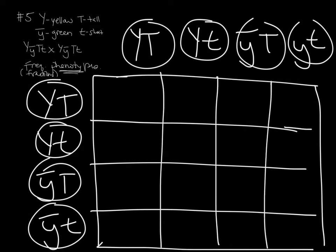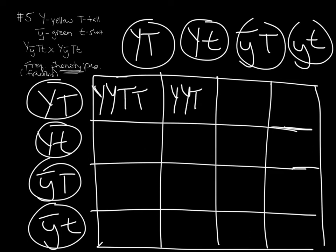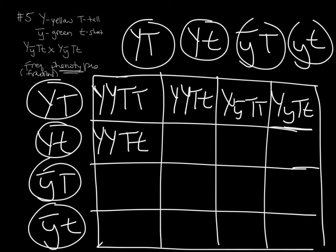Not every cross with two genes has all 16 combinations, but dihybrids do. You say, what if this egg and this sperm were fertilized? Then you get two big Y's and two big T's, for example. Going through the whole thing you get 16 genotypes — some the same, some different — and you have to figure out what phenotype matches each and count them. I'm going to fill the rest of this out and come back in a second.